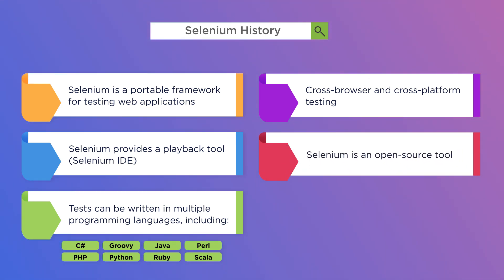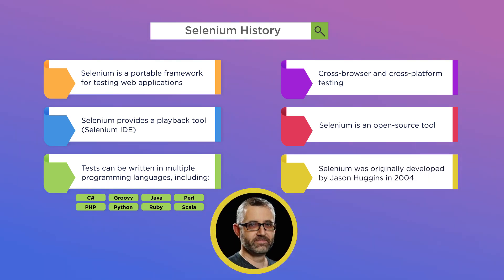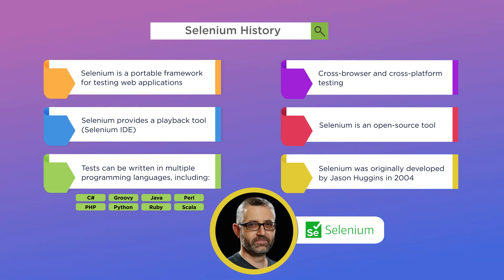Selenium was originally developed by Jason Huggins in 2004 as an internal tool at ThoughtWorks. The name Selenium comes from a joke made by Huggins in an email, mocking a competitor named Mercury, saying that you can cure mercury poisoning by taking selenium supplements. The others that received the email took the name and ran with it.